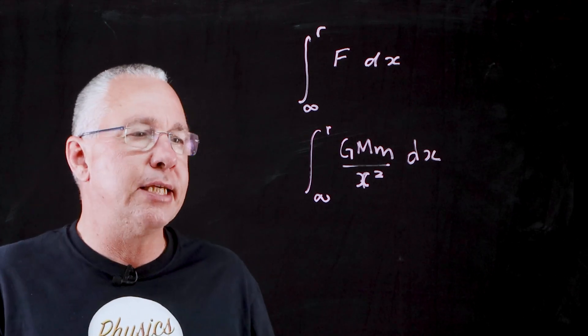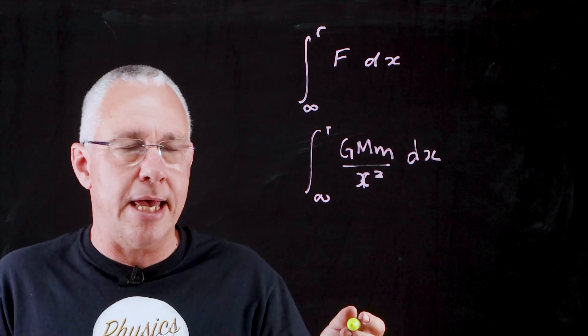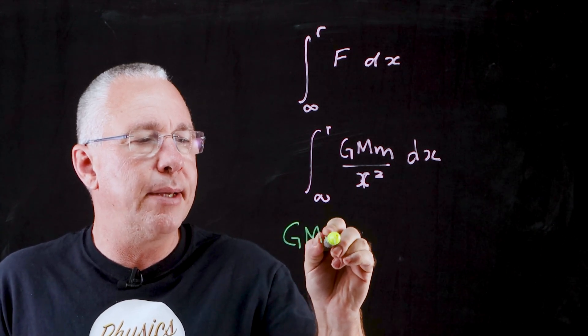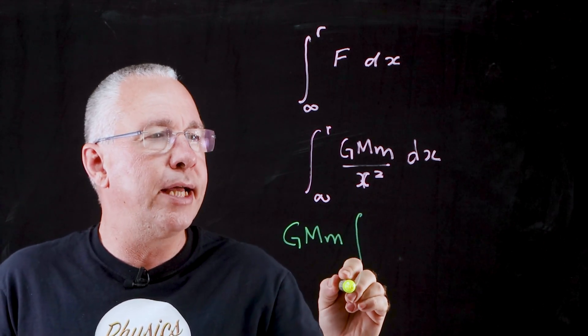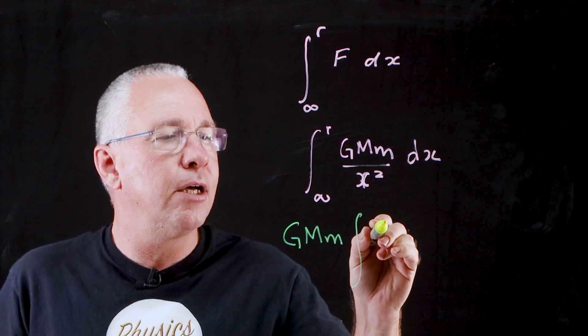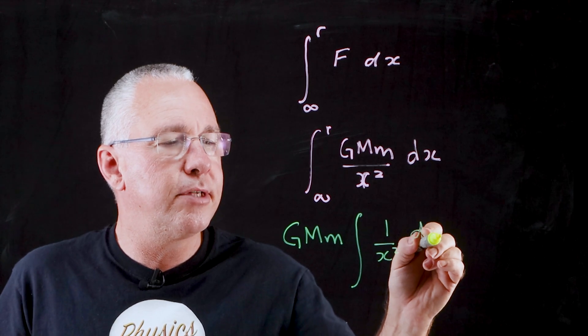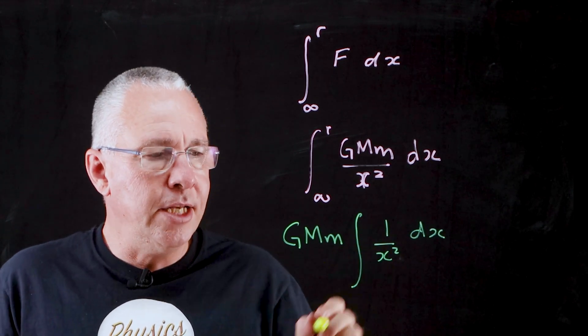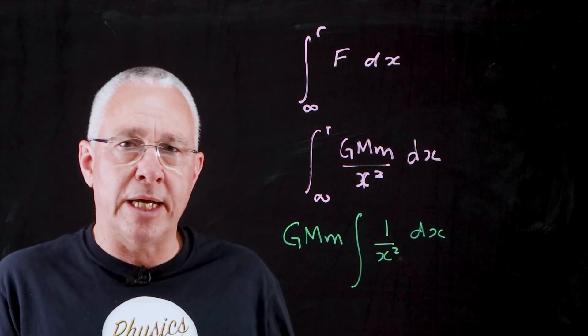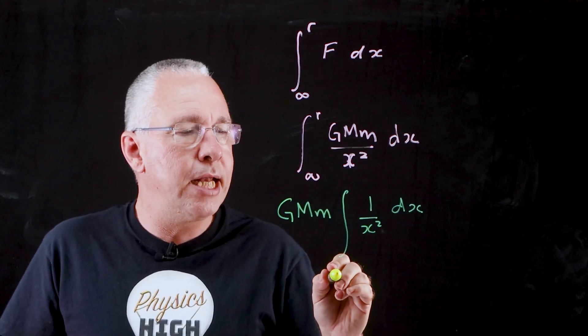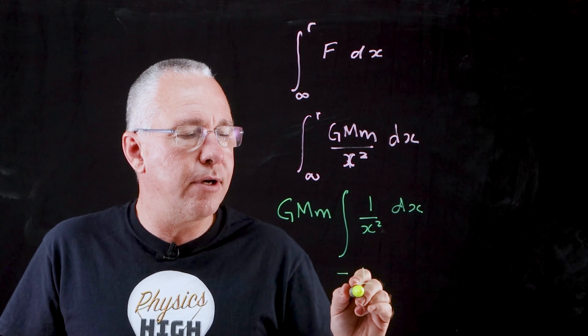Now to integrate this, we can take the G and M and m outside. So we get GMm outside, and then integrate what we have left over, which is 1 over x squared with respect to x. Now the integral of 1 over x squared, or x to the negative 2, is actually equal to negative 1 over x.